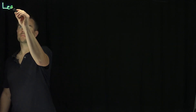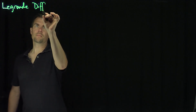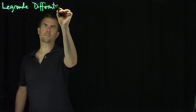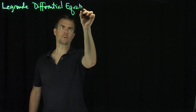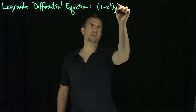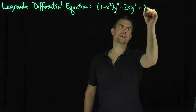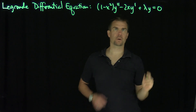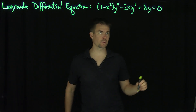Hello, students. In this video, we'll consider the Legendre differential equation. Legendre's differential equation has the following form: (1 - x²)y'' - 2xy' + λy = 0. It's a Sturm-Liouville differential equation where we're solving an eigenvalue problem for a certain differential operator.